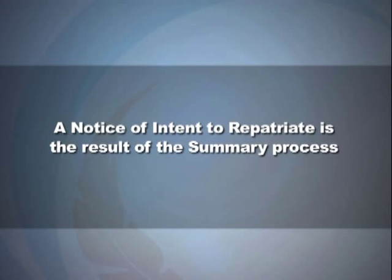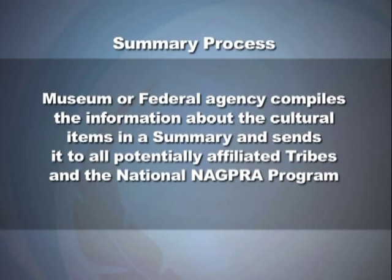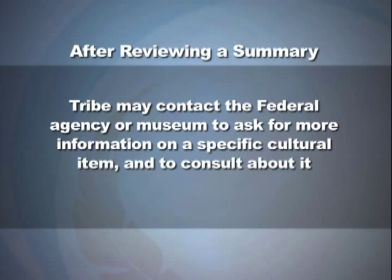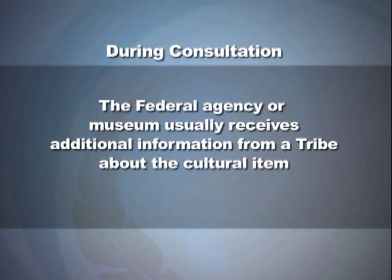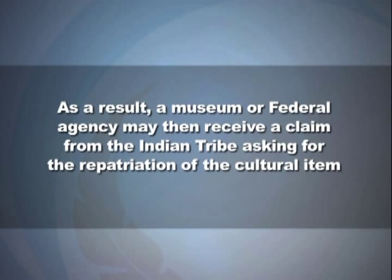In the summary process, the museum or federal agency compiles information about cultural items and sends it to all potentially affiliated tribes and the National NAGPRA program. After reviewing the summary, a tribe may contact the agency or museum to ask for more information and to consult. During consultation, the agency or museum usually receives additional information from the tribe. A tribe may then send a claim requesting repatriation of the cultural item. The museum or federal agency has 90 days from receiving the claim to make a decision about repatriation.